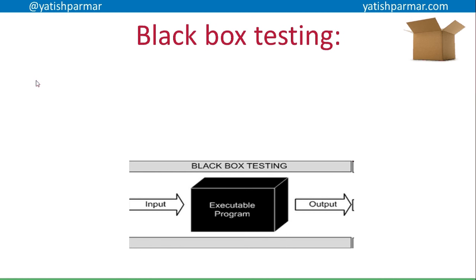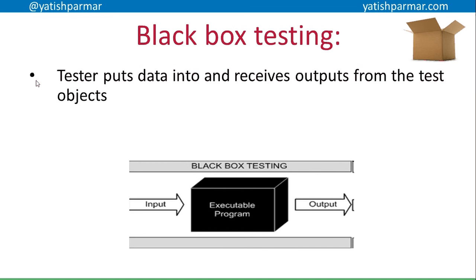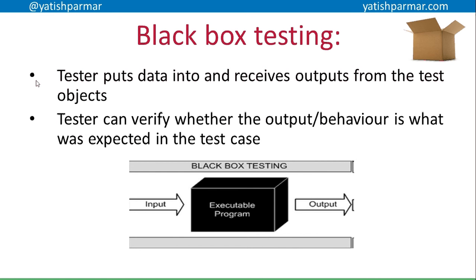In terms of the box approach, first of all black box testing. Black box testing basically assumes that the system is like a black box - you've got no idea what's going on inside it. You're putting an input and you get an output. Is the actual output what you expected in correspondence to that input? The tester is putting data in and receiving output from the different test objects. The best way to test the system is to cut it down and test each function in isolation, and then do some integration testing by putting the functions together.